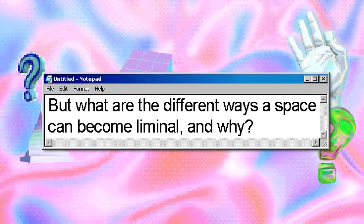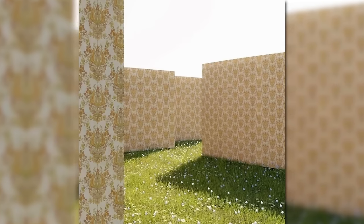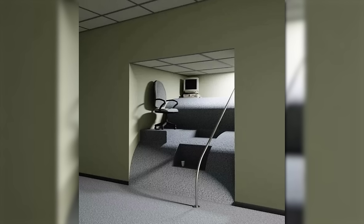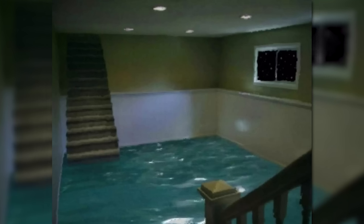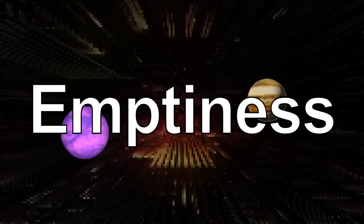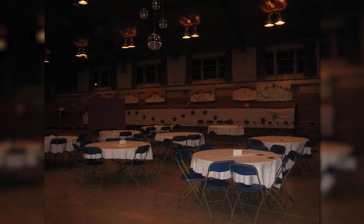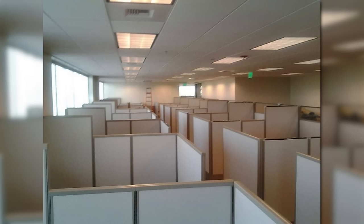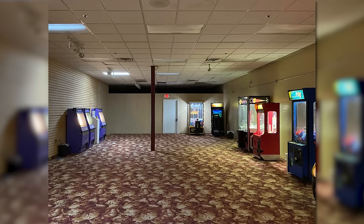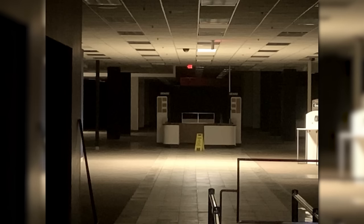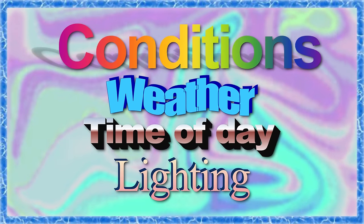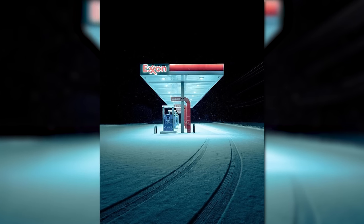But what are the different ways a space can become liminal and why? In order to truly understand liminal spaces, we need to understand exactly what makes these spaces liminal. The main idea is breaking the expectations of reality or changing the pre-designed context or purpose. Emptiness is a key part — places that are usually full of people but are now left empty are liminal, and the lack of people is pretty much a requirement. Sometimes there are places where conditions such as weather, time of day, or lighting are always the same when you visit. When the expectations of the usual conditions are broken, it becomes liminal.